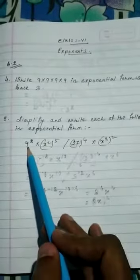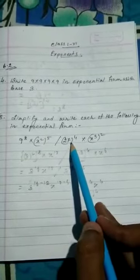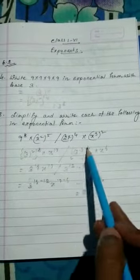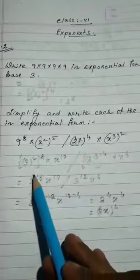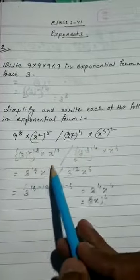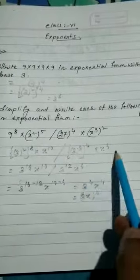So 9 means what? 3 squared. So that's 3 squared to the power 8 times x to the power 2 times 5 is 10. 27 means 3 to the power 3, to the power 4, times x to the power 3 to the power 6. So what is the result? 3 to the power 2 times 8 is 16, x to the power 10 divided by 3 to the power 12 times x to the power 6.